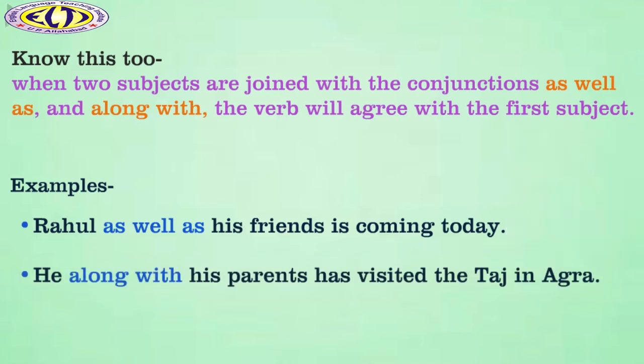Now, here we can see that in the first sentence, the verb is concords with the first subject Rahul. And similarly, in the second sentence, the verb has also concords with the first subject, he.